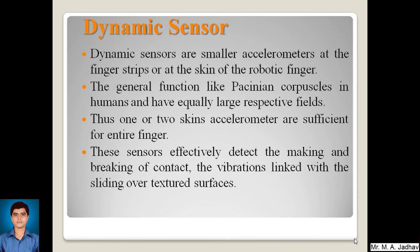Dynamic sensors are smaller accelerometers placed at the fingertips or at the skin of the robotic finger. They function like Pacinian corpuscles in humans and have equally large receptive fields, so one or two skin accelerometers are sufficient for an entire finger. These sensors effectively detect the making and breaking of contact, and the vibrations linked with sliding over textured surfaces.